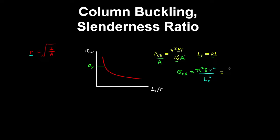And then doing a bit of algebra, we can write this as pi squared E divided by the effective length over the radius of gyration squared. And this here is the slenderness ratio, and the critical buckling stress is inversely proportional to the square of the slenderness ratio.